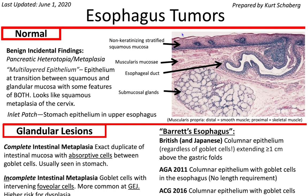First off, histology. Here is where you would eat food and it would go down the esophagus into the stomach. The esophagus is lined by non-keratinizing stratified squamous mucosa. Below that, you have your muscularis mucosae. I'd like to talk about this as an example of how knowing histology is very important in differentiating different treatment implications.